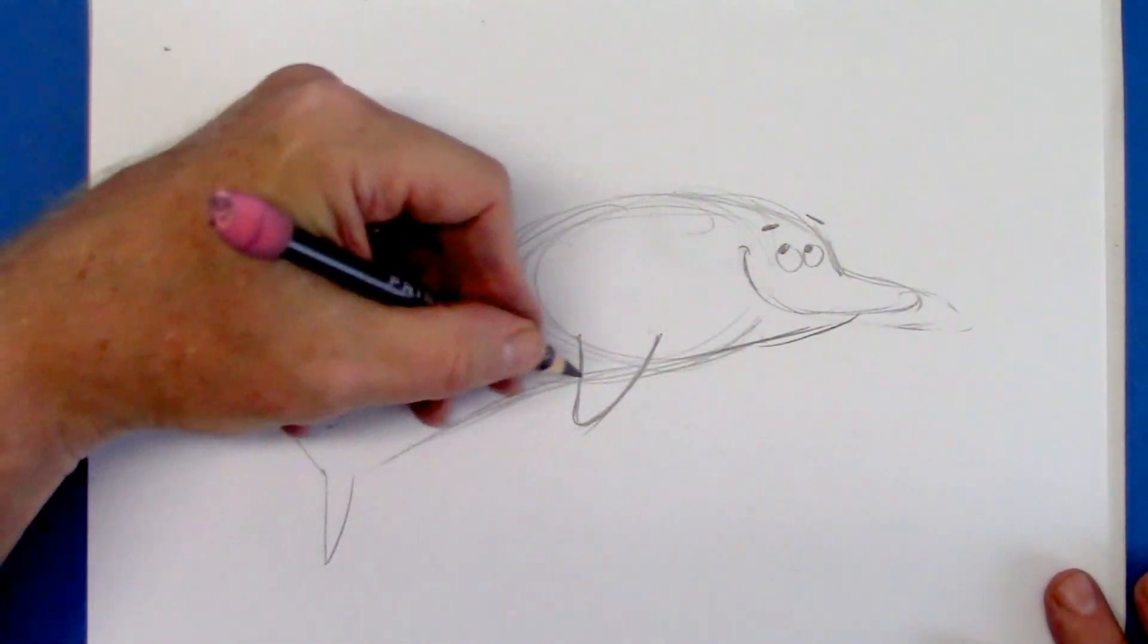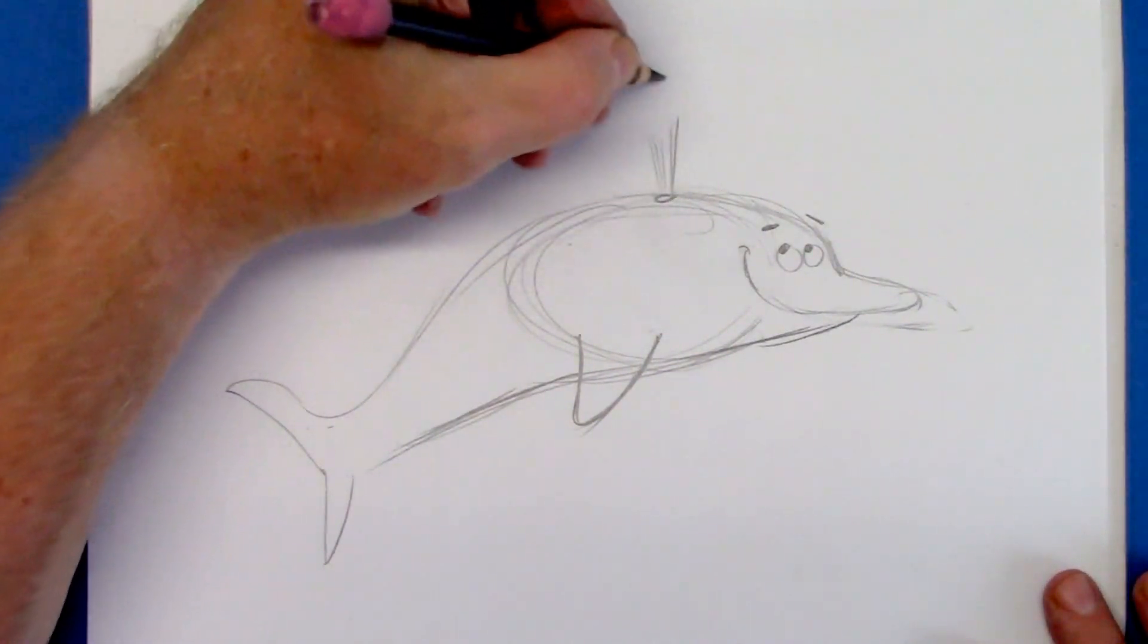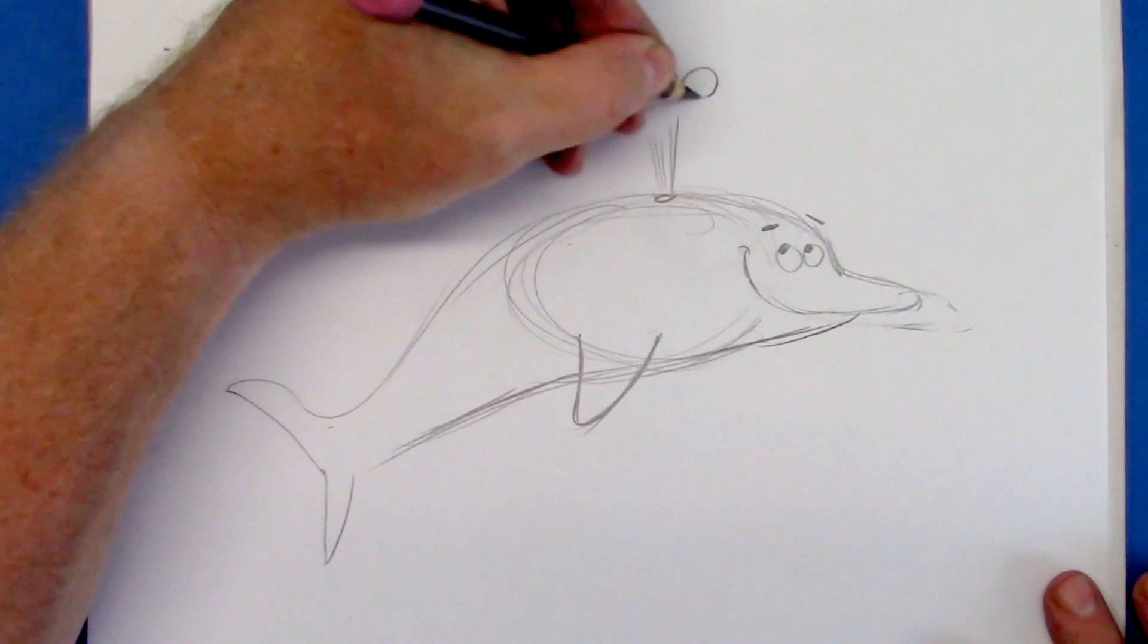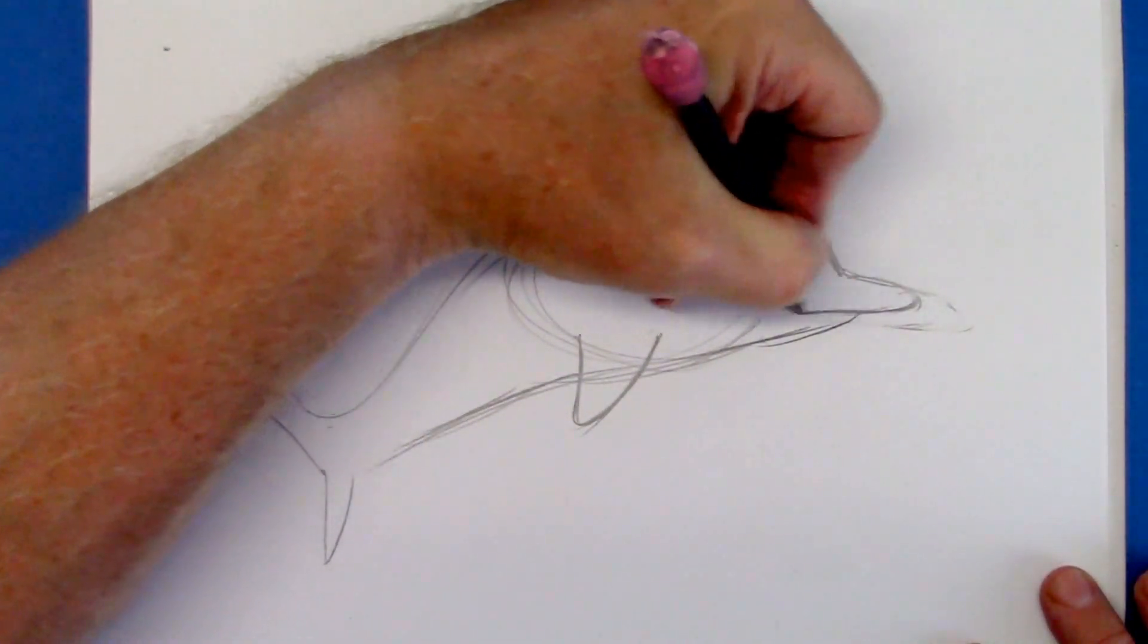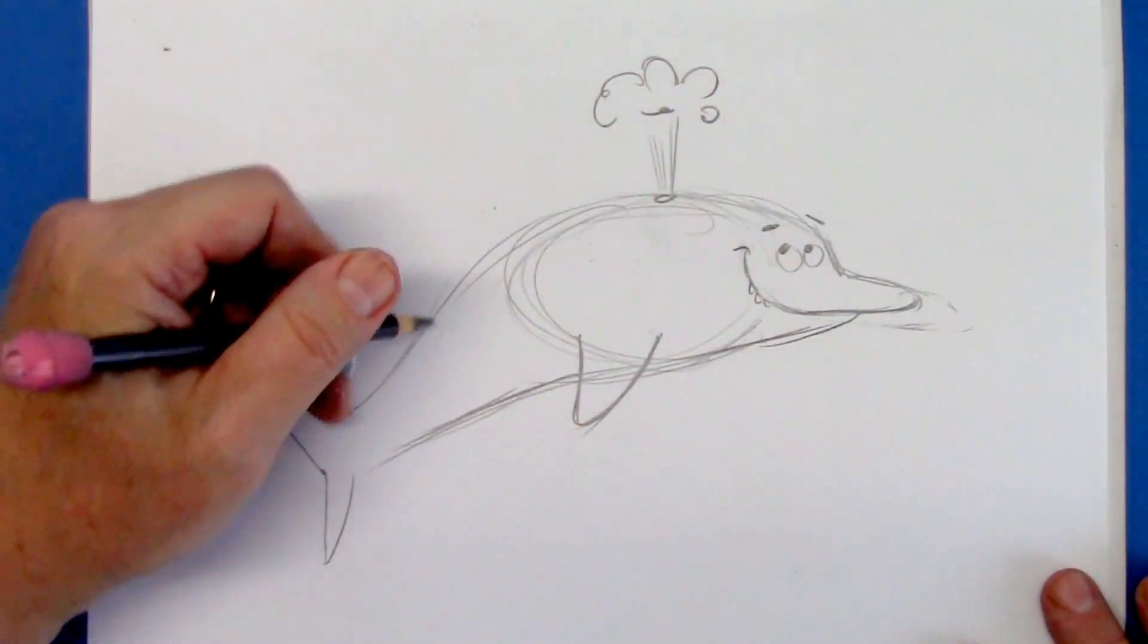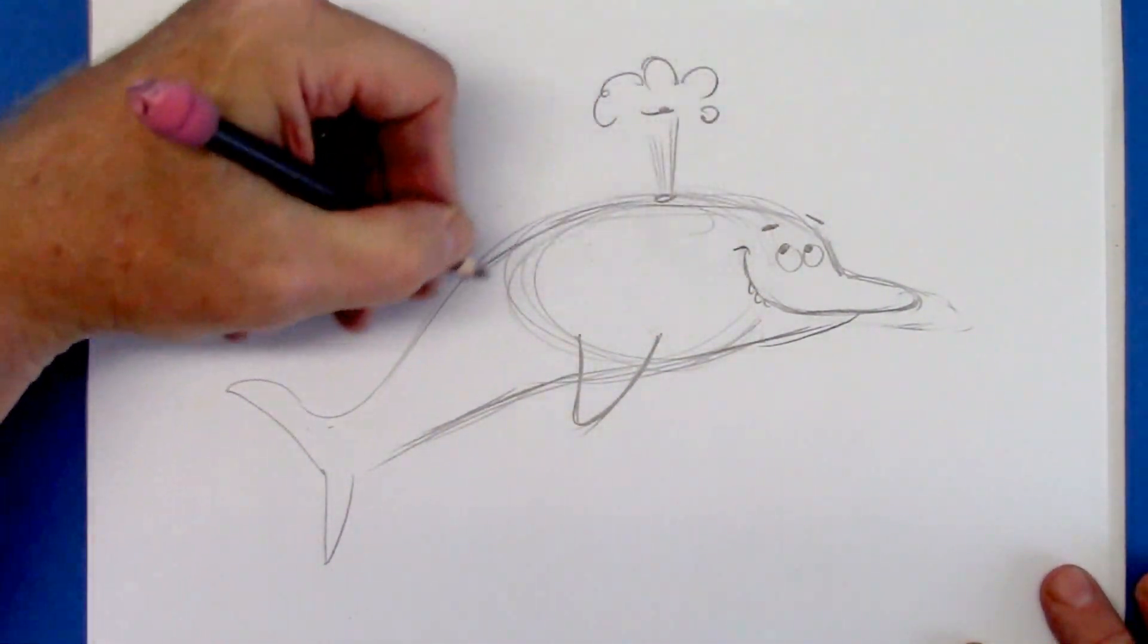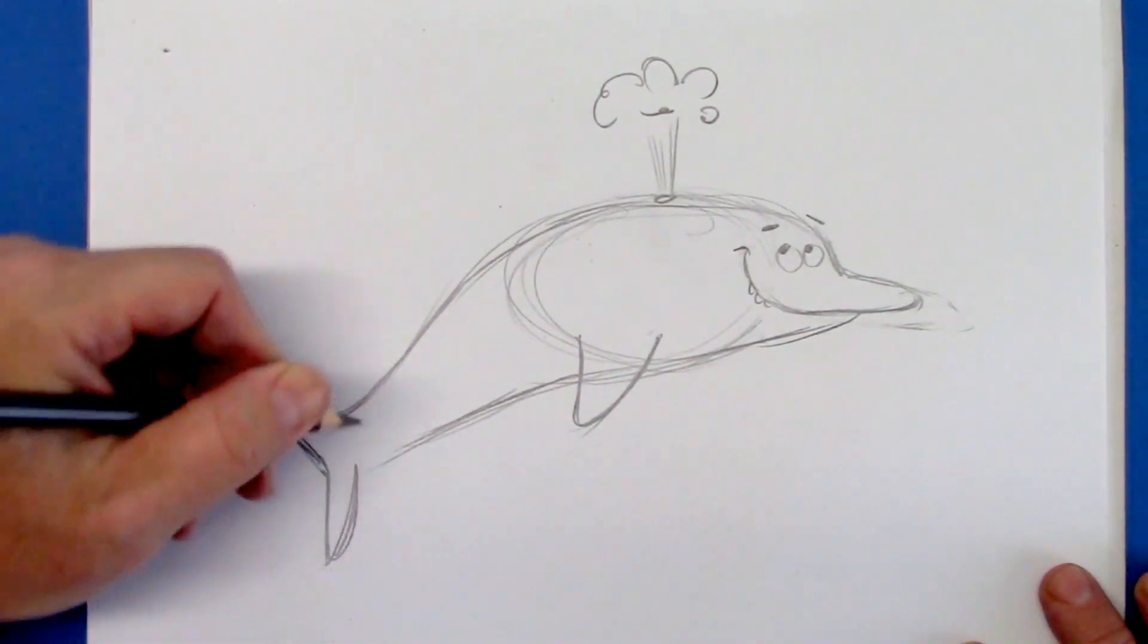Don't make the flipper too pointy, because you want it to look friendly. And if you make it very sharp, it's going to start looking like a shark. So even if you give them some teeth, they should be rounded for the same reason. Same thing with the back flippers. Rounded.